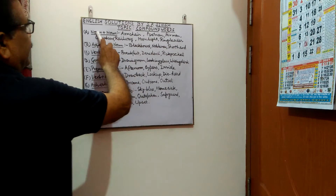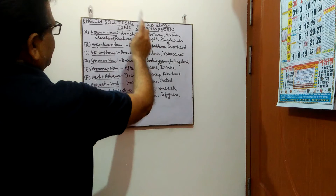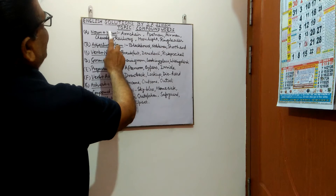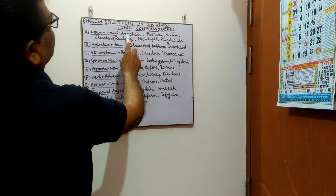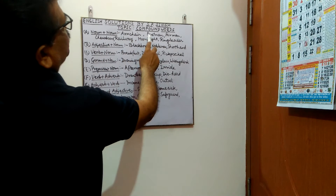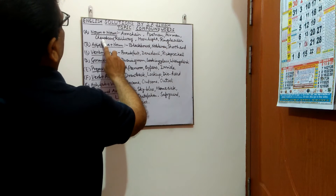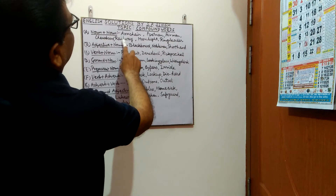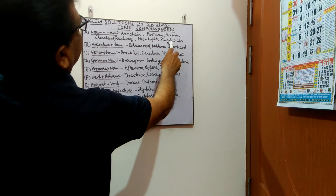The first category of compound words, which is being printed here, is noun plus noun. Examples are: armchair, postman, airman, chessboard, railway, moonlight, ringleader.